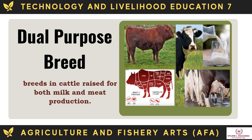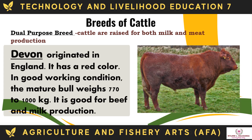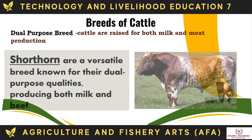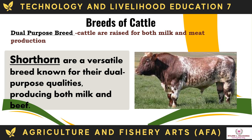The dual-purpose breed of cattle includes breeds raised for both milk and meat production. Debon originated in England and has a red color; in good working condition, the mature bull weighs 770 to 1,000 kg, and it is good for both beef and milk production. Shorthorn is a versatile breed known for its dual-purpose qualities, producing both milk and beef.